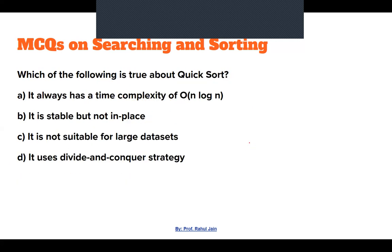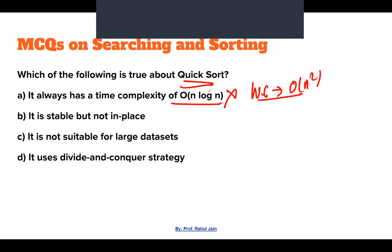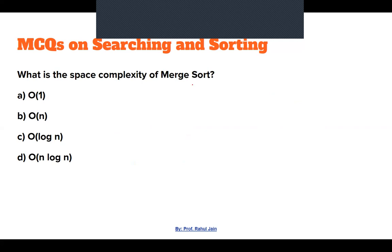Next: Which of the following is true about quick sort? It does not always have O(n log n) — worst case can be O(n²). It is in-place, not just stable. It is suitable for large datasets because of best-case O(n log n). It uses divide and conquer strategy — yes, that is correct. Option D is the answer.